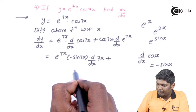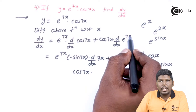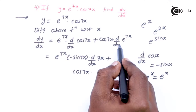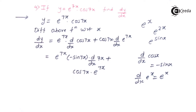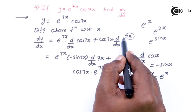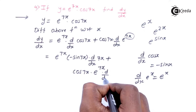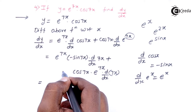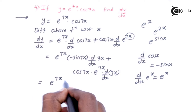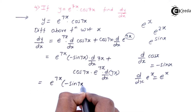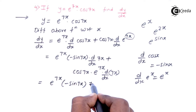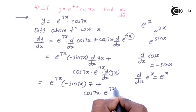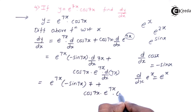Plus v as it is, cos 7x, into the derivative of e raised to 7x. The derivative of e raised to x is e raised to x, so the derivative of e raised to 7x is e raised to 7x. Since x is replaced by 7x, we multiply by the derivative of 7x again — this is the chain rule. The next step gives: e raised to 7x into minus sin 7x, times 7 (since the derivative of 7x gives 7, and derivative of x is 1), plus cos 7x into e raised to 7x, times 7.